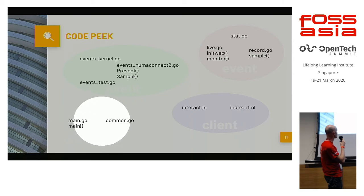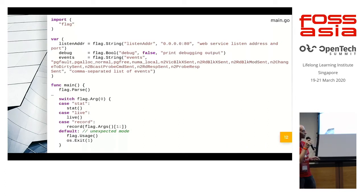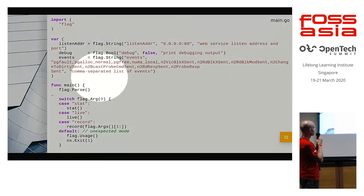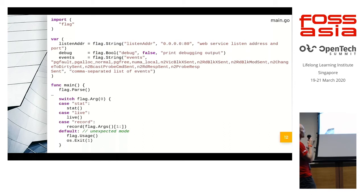I have top-level files for argument handling. In main.go, we have argument handling — very simple, just passing any flags when you run any of the different modes of the binary.